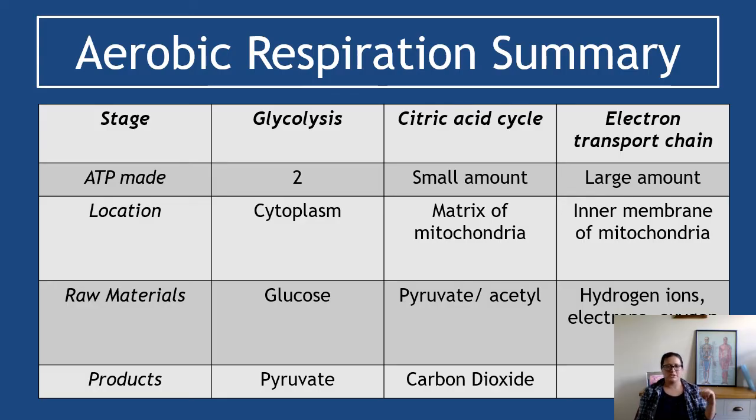The location of glycolysis is the cytoplasm. The citric acid cycle is the matrix of the mitochondria. And the electron transport chain is the inner membrane of the mitochondria. The raw materials for glycolysis are glucose, that's it. The raw material for the citric acid cycle is pyruvate slash acetyl. And the raw material for the electron transport chain is hydrogen ions, electrons, and oxygen.